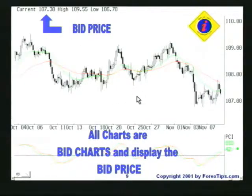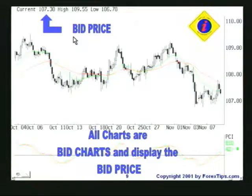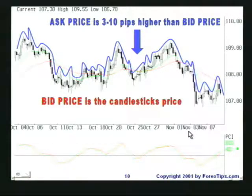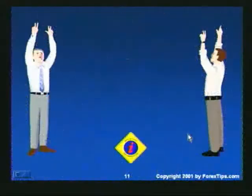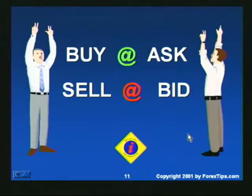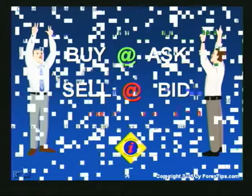Important information: most traders watch a bid chart. This is a bid chart, monitoring the bid price. There is a bid and an ask — usually 3 to 10 pips spread in currencies. In all financial products there is a bid and an ask; the bid is always lower than the ask price. Traders buy on the ask and sell on the bid, because buyers buy from sellers and sellers sell to buyers.